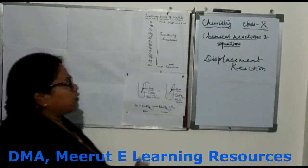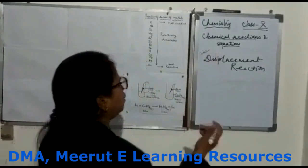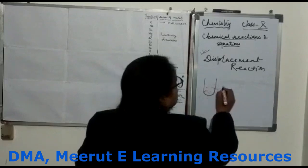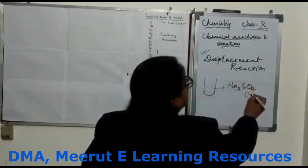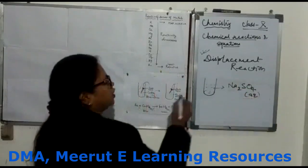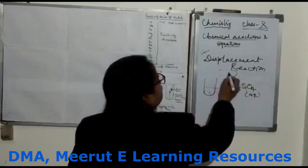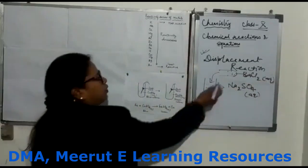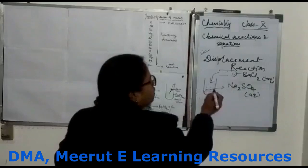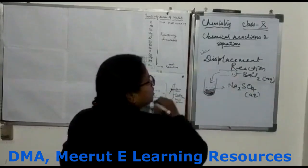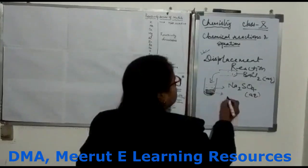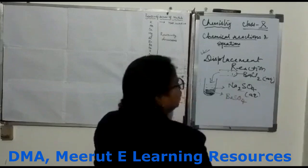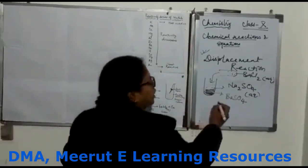Now we will discuss another activity that introduces another type of reaction. We take a test tube containing sodium sulphate solution, which is a colourless aqueous solution. We add barium chloride solution, which is also a colourless aqueous solution. When the reaction takes place, a white substance settles down at the bottom. That white substance, which is a new substance formed, is barium sulphate (BaSO₄). This barium sulphate settles at the bottom of the test tube and we call it a precipitate.